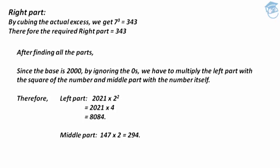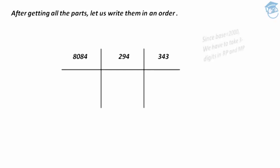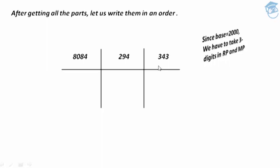After getting the left part, middle part, and right part, we write all the parts in order, then place horizontal and vertical bars. Since the base is 2000, which has 3 zeros, we take only 3 digits in the right part as well as in the middle part, while the left part can have as many digits as needed. The right part is 343, a 3-digit number, written as is below the horizontal bar.